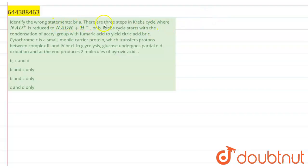is to identify the wrong statements. Four statements are given, and you have to identify the wrong ones. The first statement is: there are three steps in Krebs cycle where NAD+ is reduced to NADH + H+.